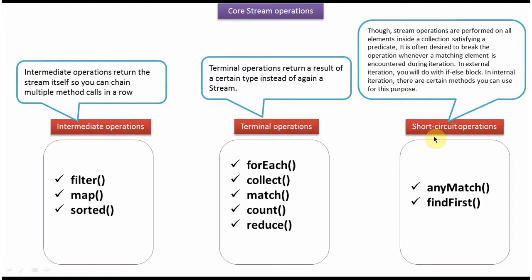And third one is short circuit operation. Examples of short circuit operations are anyMatch and findFirst.